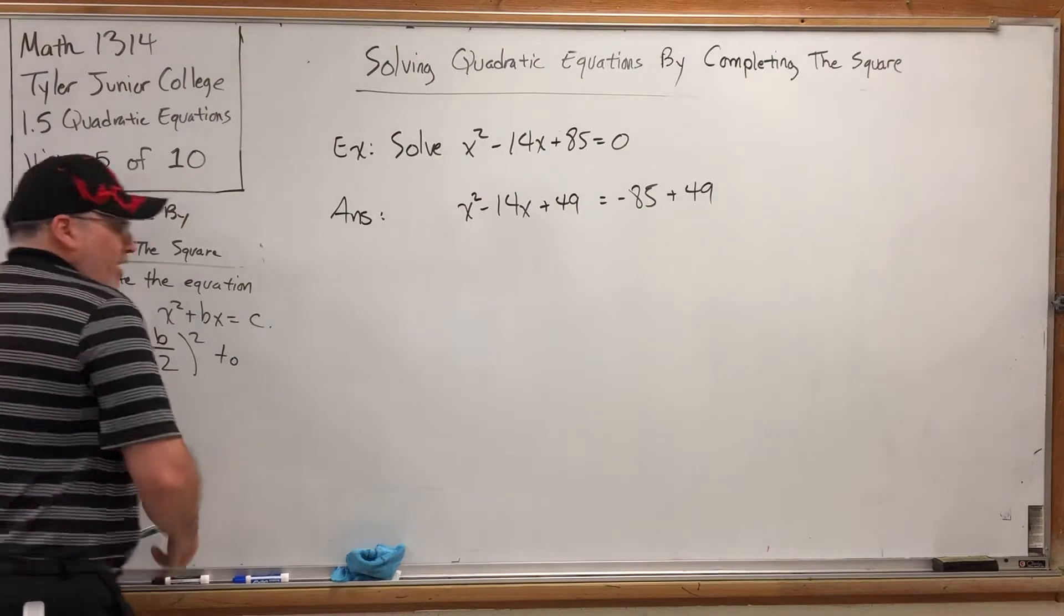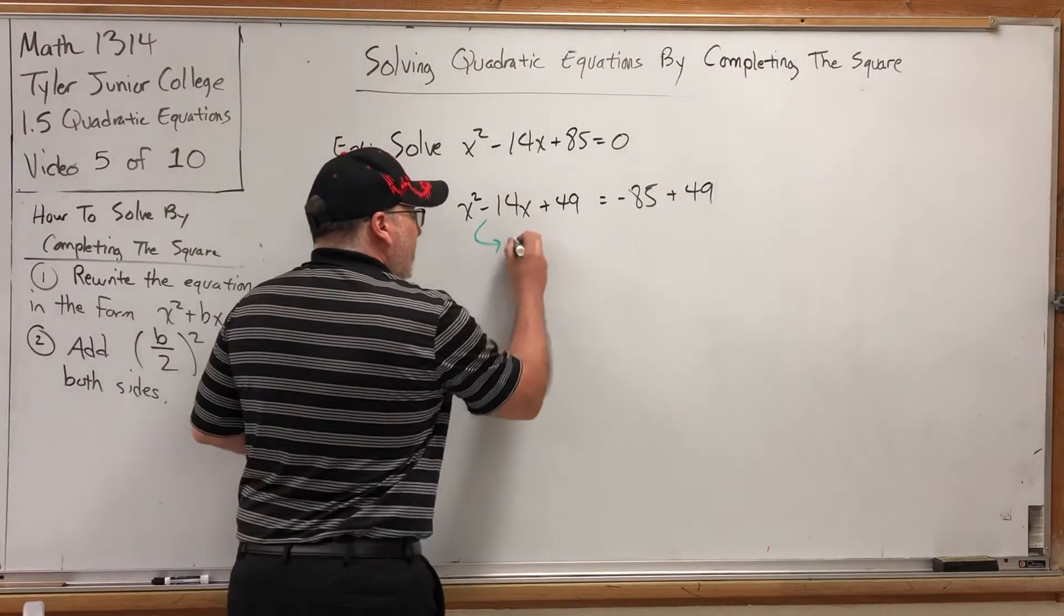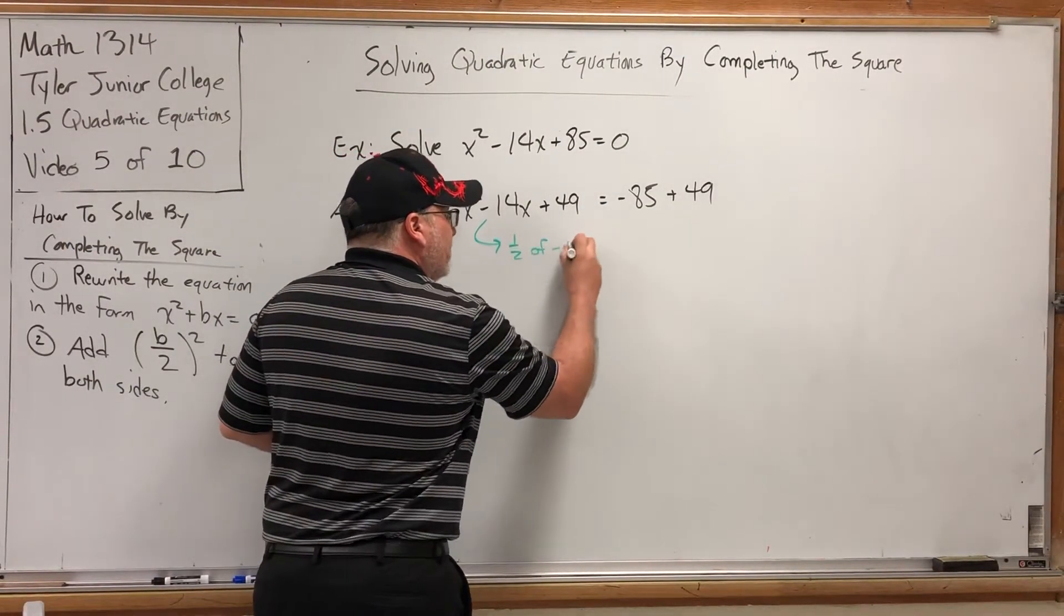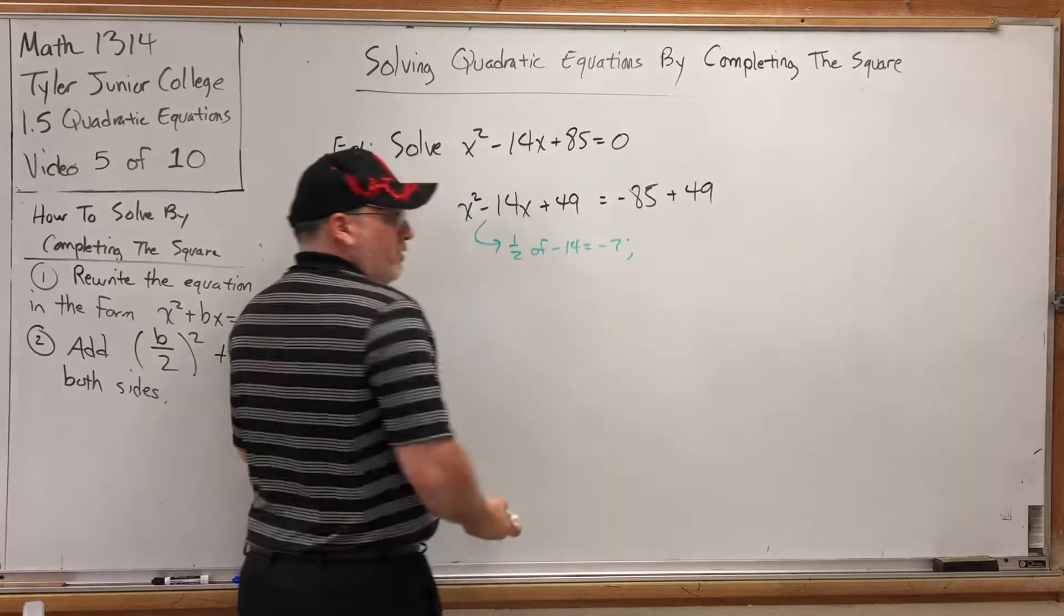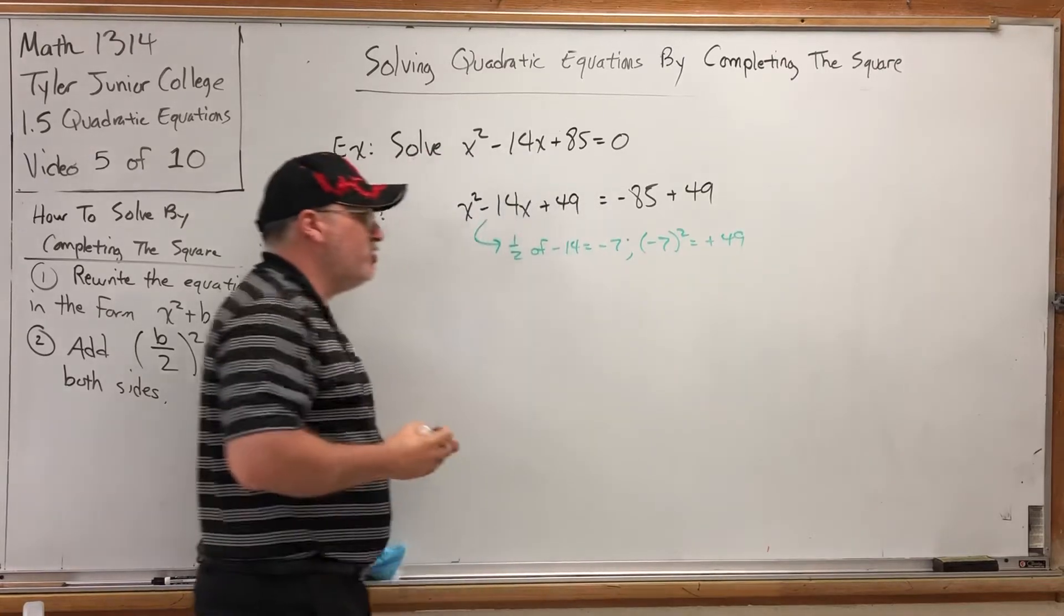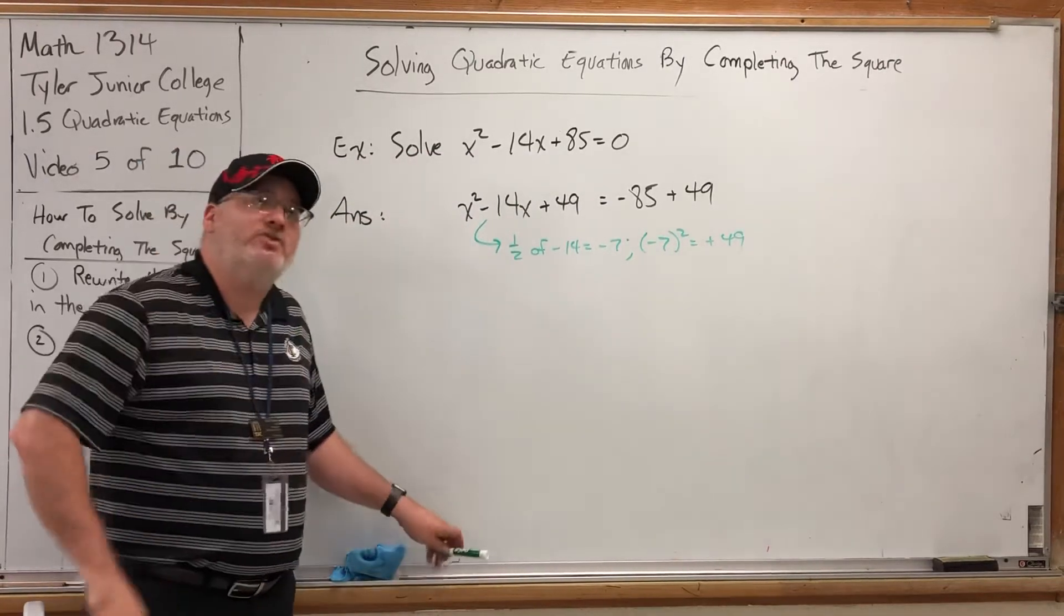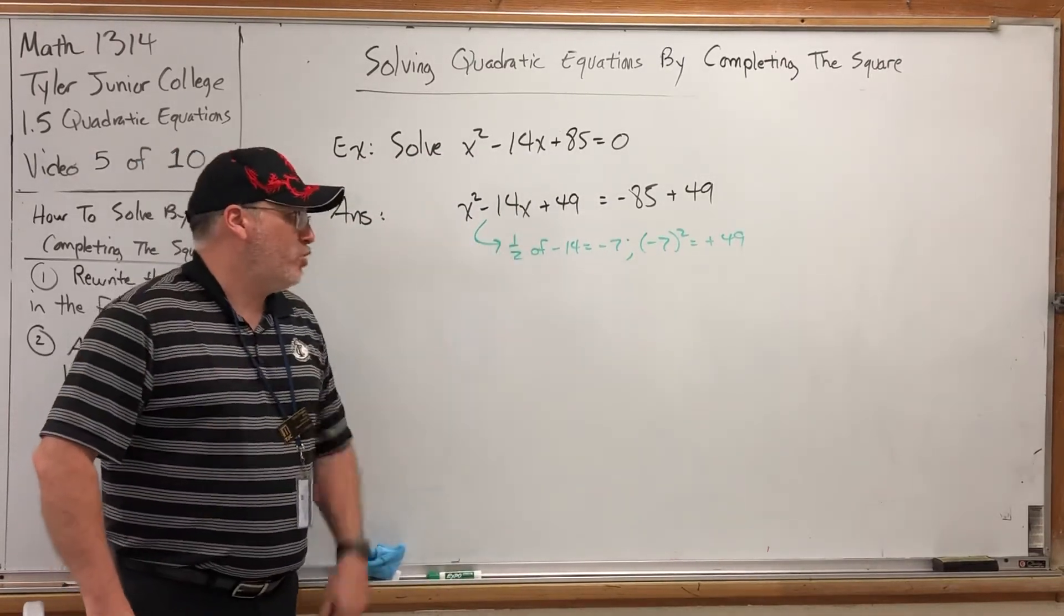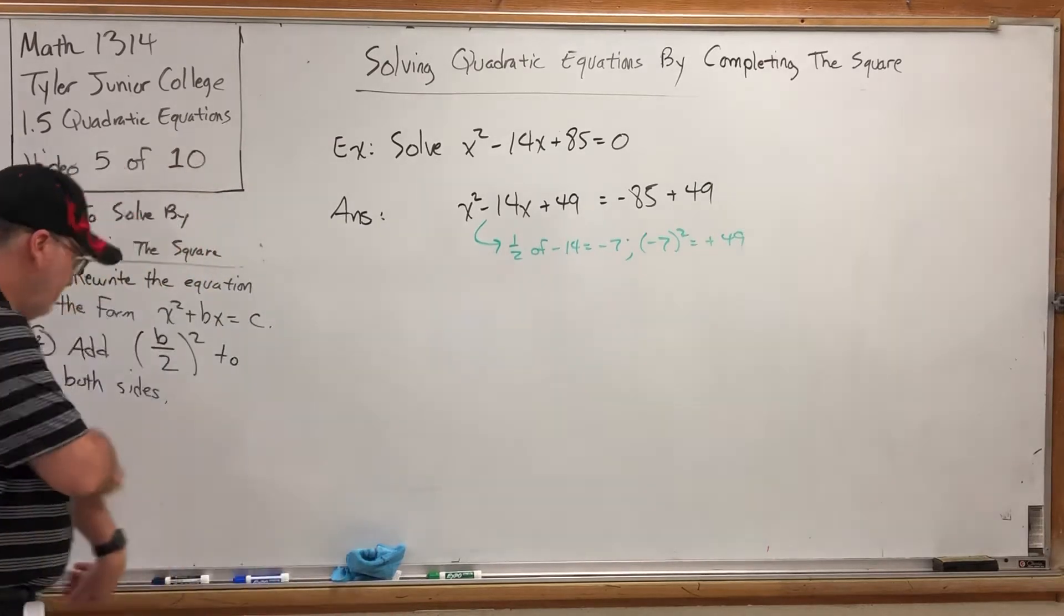If you were to document it, it would look something like this. Half of negative 14 equals negative 7. And then square that. Negative 7 squared equals positive 49. That's how you discover the perfect number to complete the square. Half of this, and then square it, add it to both sides. Now, what happens is a consequence of that move.